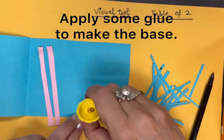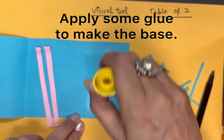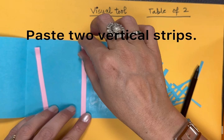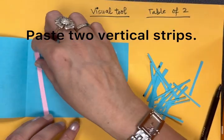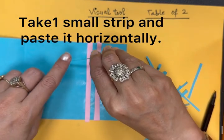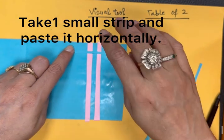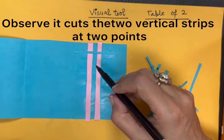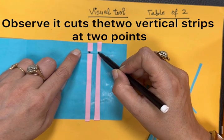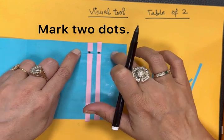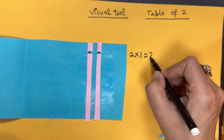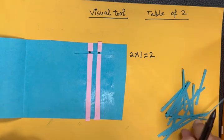Let us begin the activity. This is representing 2 times 1 equals 2. Let us take another strip.